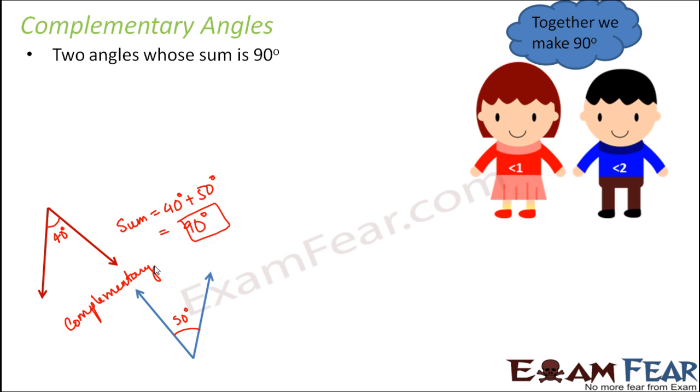So if you have two angles, angle one and angle two, if together they make 90 degrees, that means they are complementary angles. So the only criteria to become complementary is that the sum of the two angles should be equal to 90 degrees.